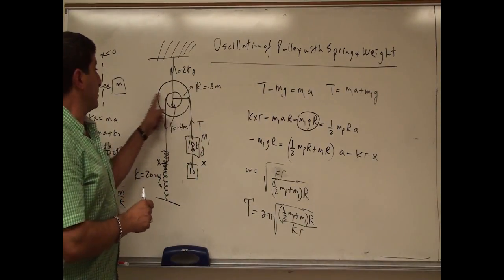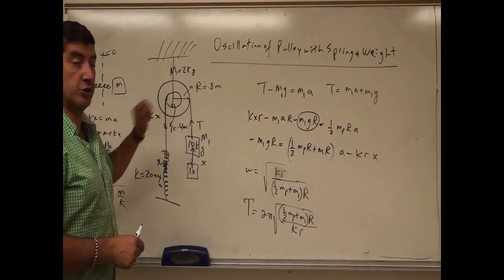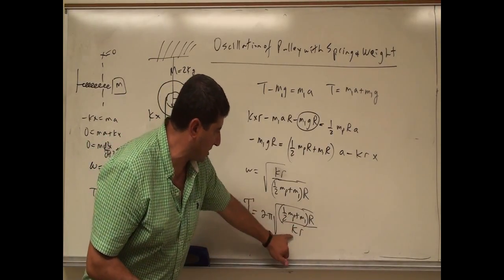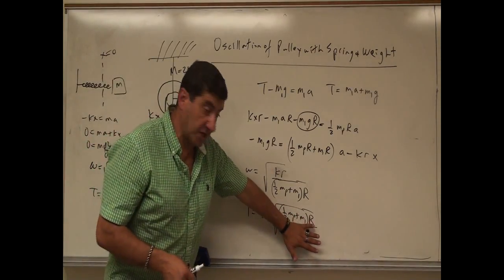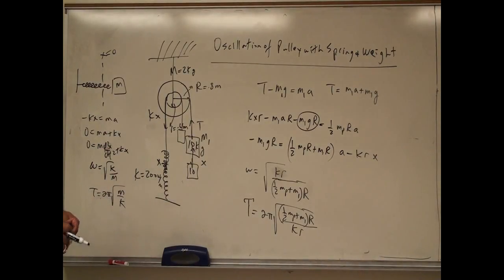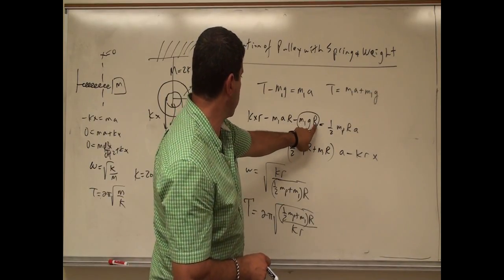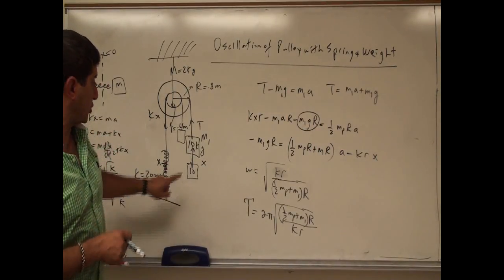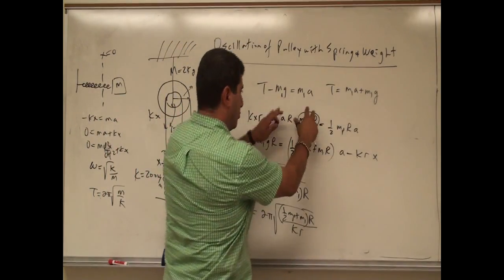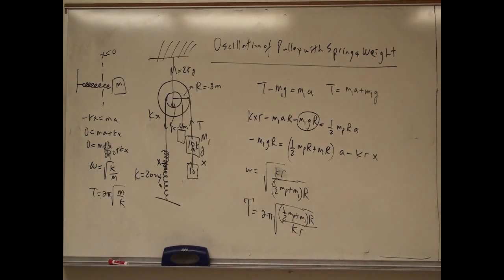So the frequency of oscillation omega equals square root of kr divided by (one-half mp plus M1) times r. The period of oscillation is 2pi times the square root of (one-half mp plus M1) times r over kr. If the spring and weight were both wrapped around the same big R axle, then the r's would cancel and you'd recover a simpler expression. You can also rederive the equations for the case where the weight is wrapped on the small axle — that changes which r appears in each term, giving a different frequency formula.